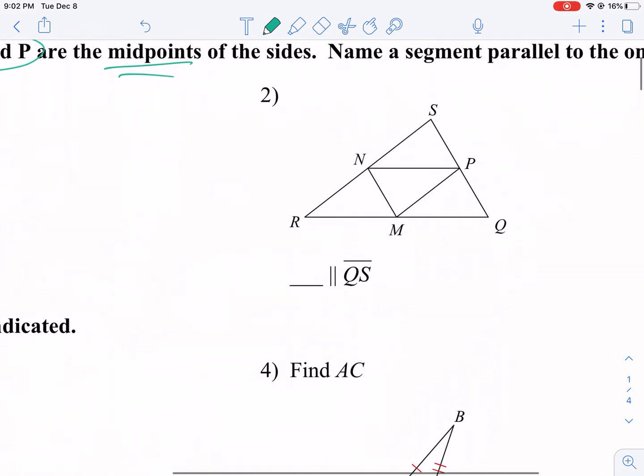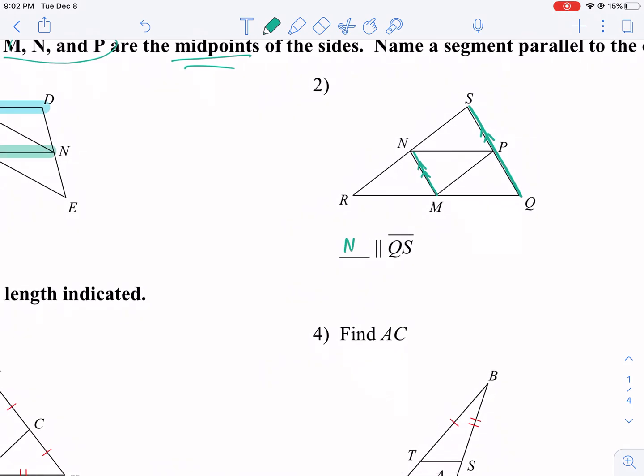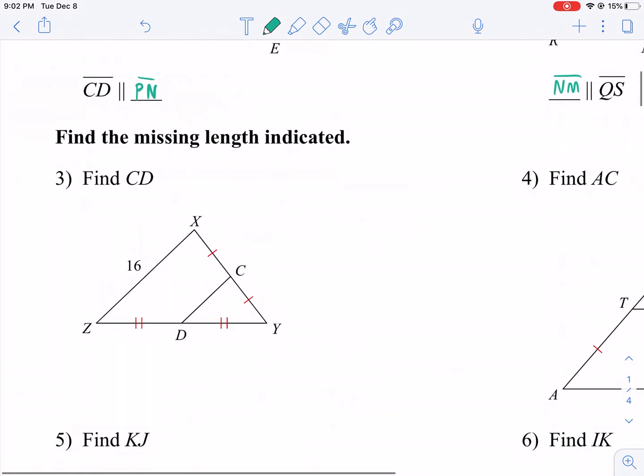Number two, equally easy. We're looking for QS, and we want something parallel to that. So that is going to be NM. This is going to be parallel to NM. Make sure you put the segment designation on top of NM to show that it's a segment.